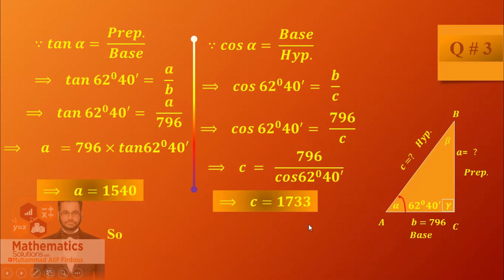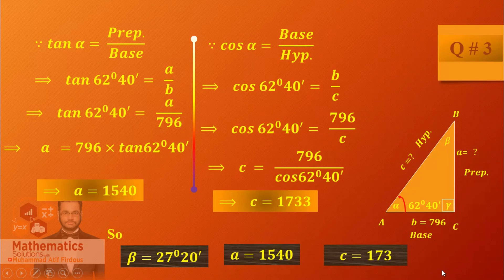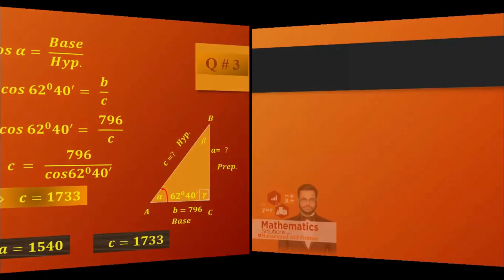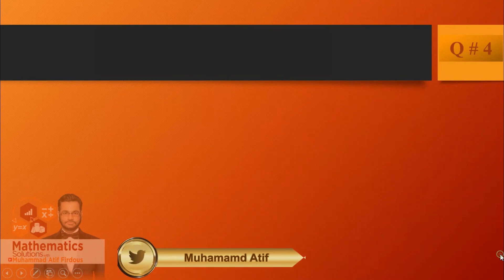Two sides have been found and one angle has been found — side A, side C, and angle beta. You have answered the question. Present your work clearly. Question number four is next.